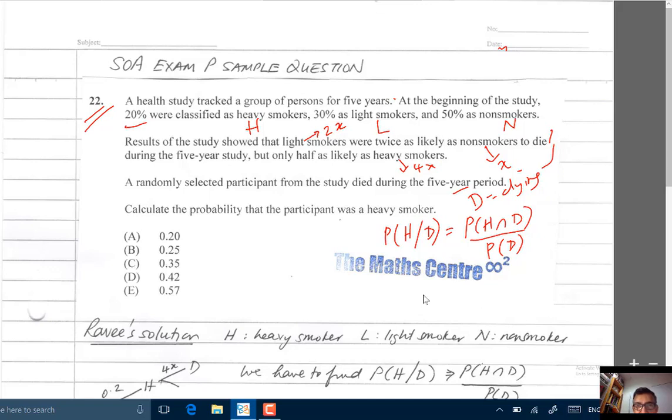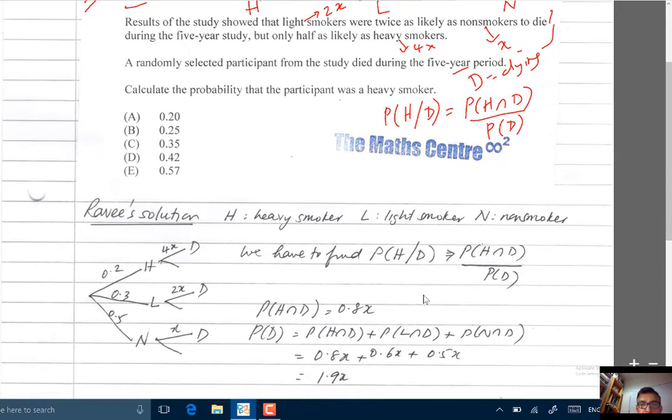Now let's look at the tree diagram that I've drawn here for you. I've got H, L and N: heavy, light and non. The probabilities are given 0.2, 0.3, 0.5.